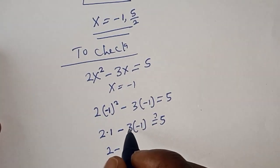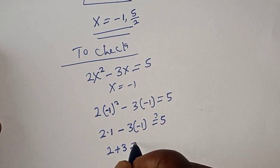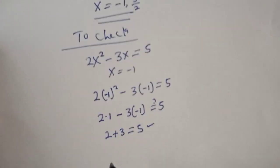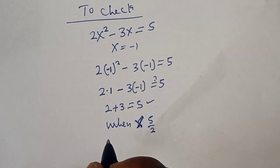2 minus 3 times (-1) gives 2 + 3 = 5. We satisfy the given equation.